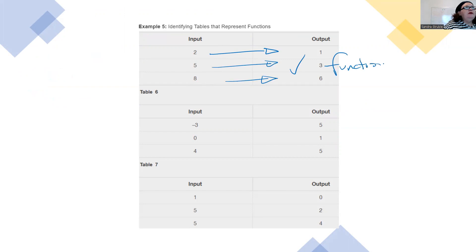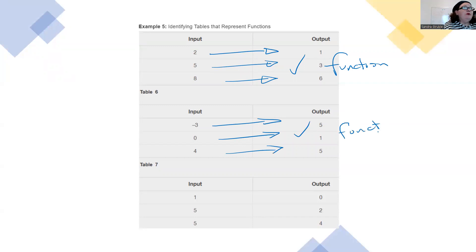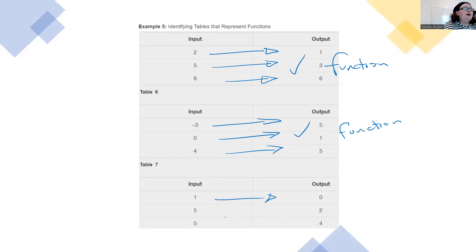It doesn't matter that negative three and four both go to five, because the inputs are negative three and four — each has its own individual output. Now table seven: one goes to zero, that's fine. But five has two outputs. That's the problem — not a function.